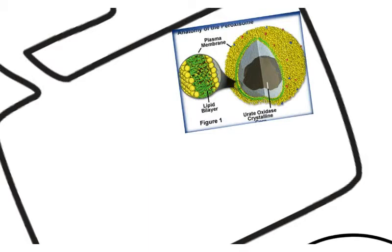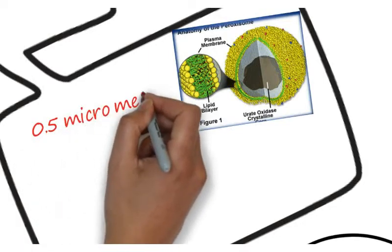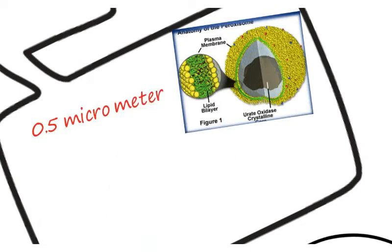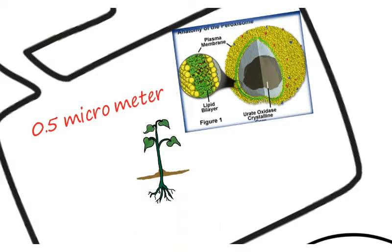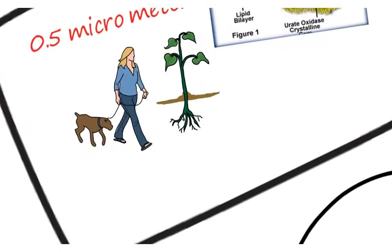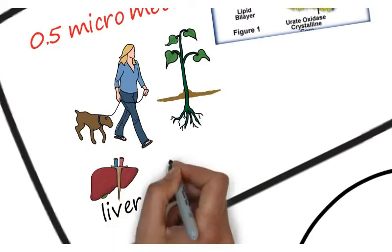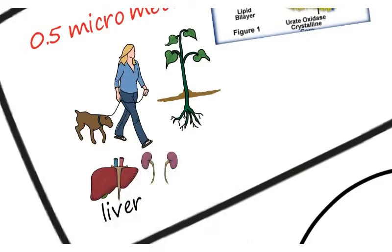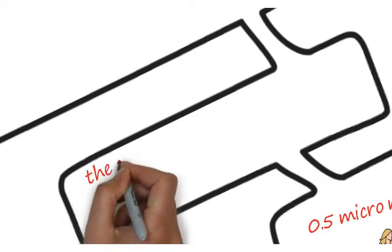They are 0.5 micrometers in diameter and are found in most leaves of higher plants and animals. In animal cells, they are most common in liver cells and kidney cells.